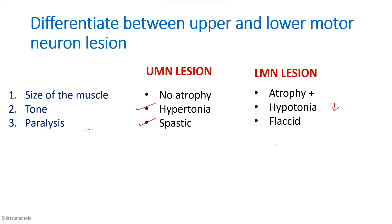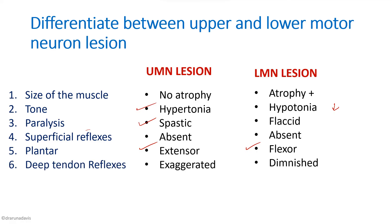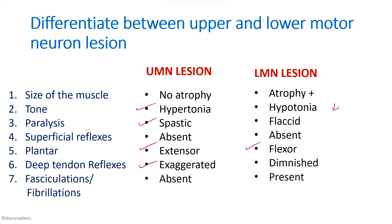Regarding superficial reflexes: they will be absent in both UMN and LMN lesions. The plantar reflex will be extensor in UMN lesion — this is known as Babinski sign — whereas it will be flexor in LMN lesion. Deep tendon reflexes will be exaggerated in UMN lesion and diminished in LMN lesion. Fasciculations and fibrillations will be absent in UMN lesion but present in LMN lesion.